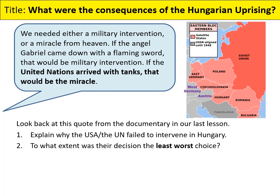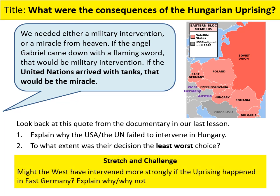Pause the video and have a think about why the USA and the UN failed to intervene — look at the geographical point just explained, but also think about the wider diplomatic and military decisions they had to consider. Think about whether their decision not to intervene was the least-worst choice. For a stretch and challenge: might the West have intervened more strongly if the uprising had happened in East Germany? Think about the geography, diplomacy and politics of the situation. Is it the case that America was simply less concerned with Hungary than with Berlin? There's no clear right answer, but it's definitely worth thinking about — why were countries like Hungary or Czechoslovakia tended to be left alone, but places like Germany were much more strongly intervened with?